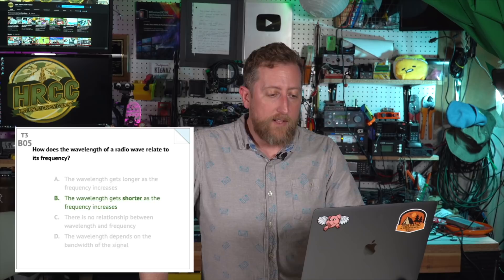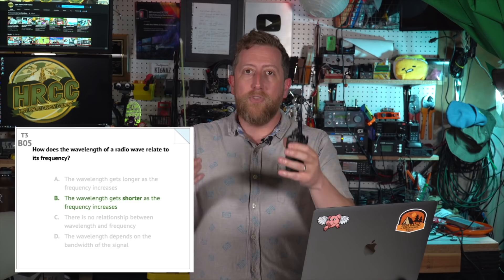T3B05: How does the wavelength of a radio wave relate to its frequency? The wavelength gets shorter as the frequency increases — that's answer B. A really easy way to look at this: the physical wavelength of a two-meter signal from peak to valley is roughly two meters. A 40-meter signal, peak to valley, is 40 meters — a big wide wavelength versus the tiny two-meter wavelength. That goes all the way up to the gigahertz space where you have centimeter wave and millimeter wave.